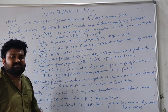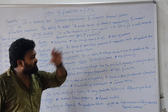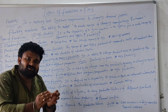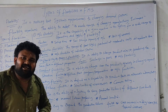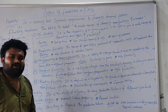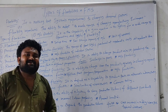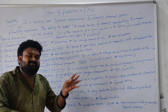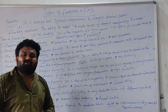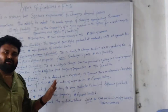Coming to production flexibility: it is the range of part types that can be produced at a moderate cost and in a moderate time. The number of parts and production parameters are the key inputs. The product output determines the value of production flexibility.